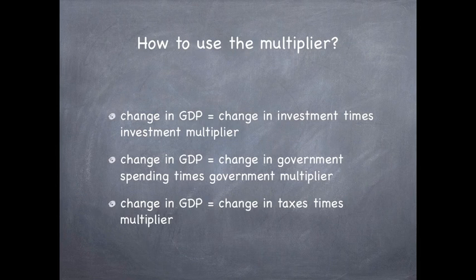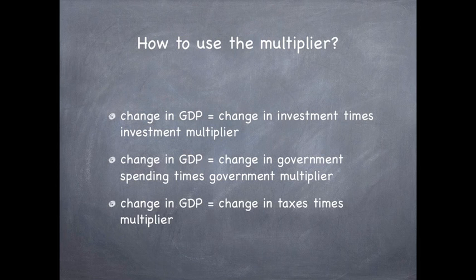How to use the multiplier? Change in GDP equals change in investment times the investment multiplier. Change in GDP equals change in government spending times the government multiplier. Or change in GDP equals change in taxes times the tax multiplier.